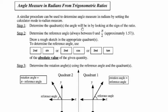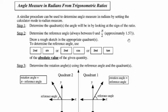We determine the quadrant which the angle will be in by looking at the sign of the ratio, then determine the reference angle, which is going to be between 0 and pi over 2, which is approximately 1.57. Then we draw a rough sketch in the appropriate quadrants. To determine the reference angle, we use the second sine (sine inverse on the calculator), or second cos or second tan, remembering to disregard the negative of the value of the trig ratio. Then use the quadrant sketch to find the rotation angle.